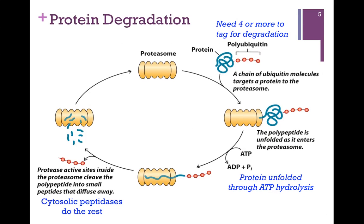Here at the top of our figure, we have the barrel-shaped proteasome, and here's our protein to be degraded with its normal fold. We've attached multiple ubiquitin molecules to a lysine residue — we need four or more to tag it for degradation. That's a double-check to make sure we've targeted the right protein, and it becomes the tag to deliver it to the proteasome where it can be degraded.